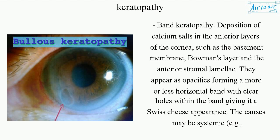Band keratopathy: deposition of calcium salts in the anterior layers of the cornea, such as the basement membrane, Bowman's layer, and the anterior stromal lamellae. They appear as opacities forming a more or less horizontal band with clear holes within the band, giving it a Swiss cheese appearance.